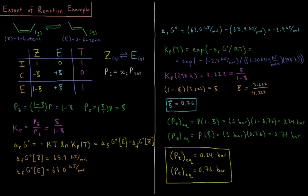The equilibrium constant equals the ratio of our product over our reactant, each raised to the power of their stoichiometric coefficients. E is to the power of 1, its coefficient; Z is to the power of 1, its coefficient. So the equilibrium constant is equal to C over (1 minus C).